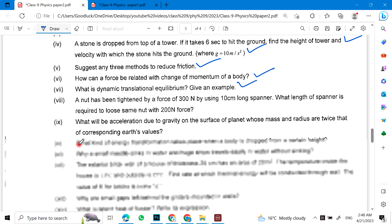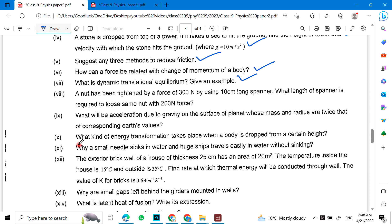After that, you will have a nut in which the force is so much and the length of the spanner is so much. Now tell us, you will have the torque. Then you have to find the length. The force is so much and the torque will be used. What will be acceleration due to gravity on the surface of a planet whose mass and radius are twice that of the earth's values?